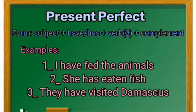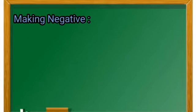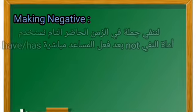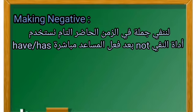لدينا بعض الأمثلة: I have fed the animals — أنا قد أطعمت الحيوانات. She has eaten fish — هي قد أكلت السمك. They have visited Damascus — هم قد زاروا دمشق. لننتقل سويًا طلاب الأعزاء إلى النفي — Making Negative.